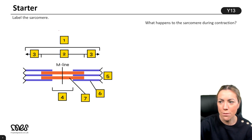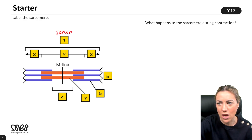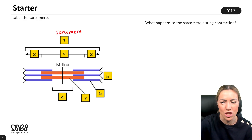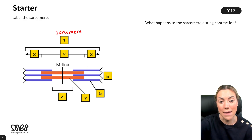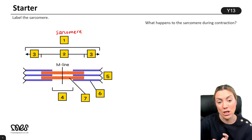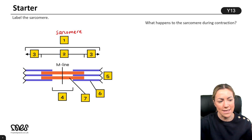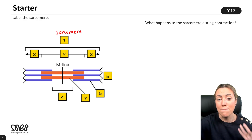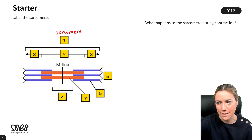Number one would be the sarcomere, because it's labeling the whole section from Z-line to Z-line with the actin and myosin filaments. That whole section is called a sarcomere, and sarcomeres are all next to each other making up what we call the myofibrils in the muscle fibers.